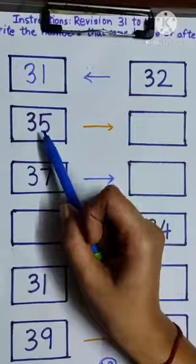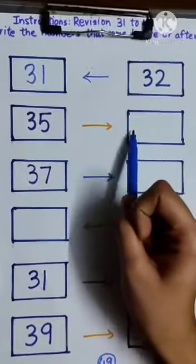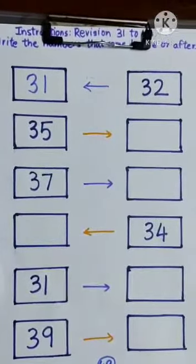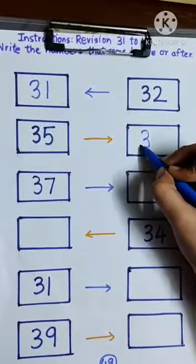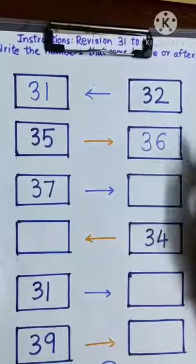Now there is number 35 and we have to write which number comes after 35. It is 36, 36.